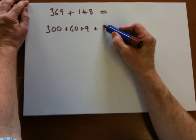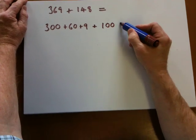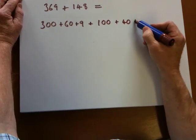And now we're partitioning 148. So 100 add 40 add 8.